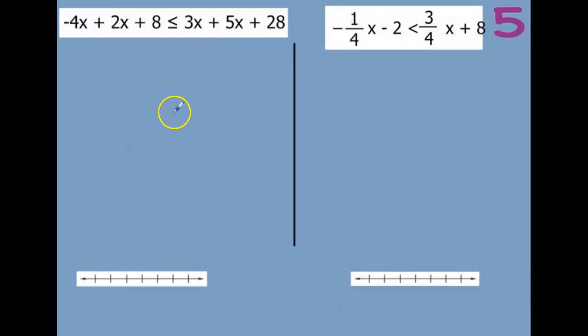Last page here. This one looks like a ton to do, but really we're just going to take it a little bit at a time. I'm going to look at just this half of the problem first and combine anything. I'm going to combine my like terms: I have a negative 4x and a positive 2x — so negative 4 plus 2. Different signs are really subtracting — 4 minus 2 is 2x, but there's more negative, so it's a negative 2x. And then there's an 8 there.